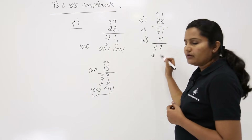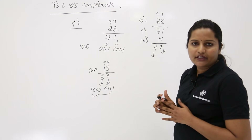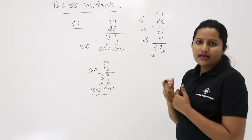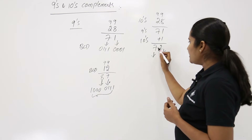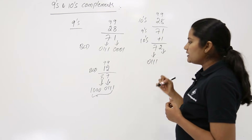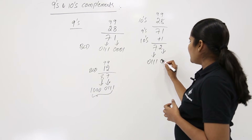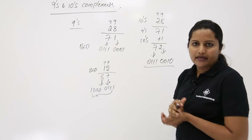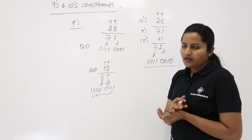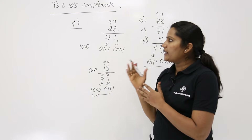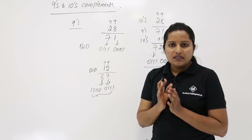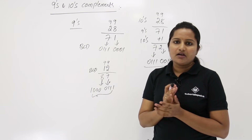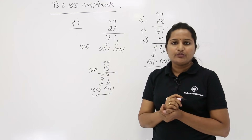Now take the BCD code for 72. For 7 you take 0111 and for 2 you take 0010. So 0111 0010 is the BCD code for the 10s complement of 28. In the same way we can find any 9s and 10s complement of any BCD number, and these are very useful in the BCD subtraction process.